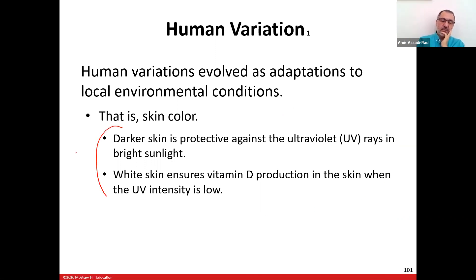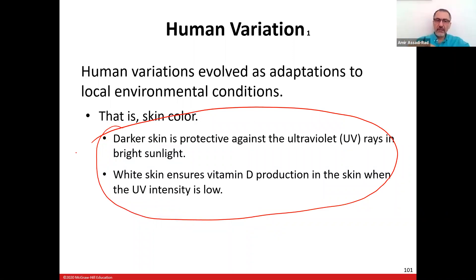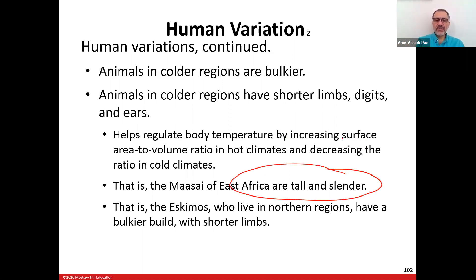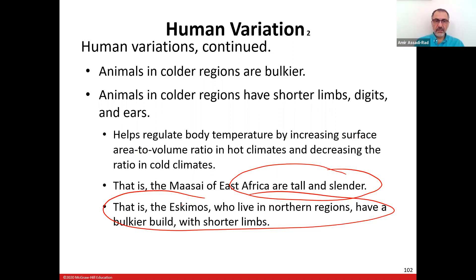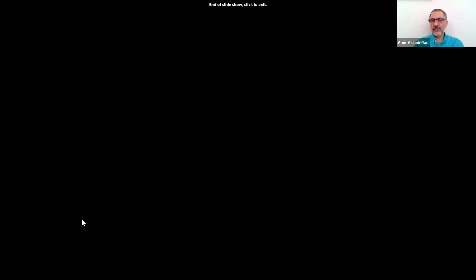Human variations: people in regions with high UV exposure have darker skin for protection, while those in regions with less sunlight have lighter skin to allow better vitamin D absorption. In Africa, people tend to be taller and more slender to regulate body temperature, while Eskimos tend to be shorter and bulkier to retain heat. That concludes Chapter 23 — please direct any questions accordingly.